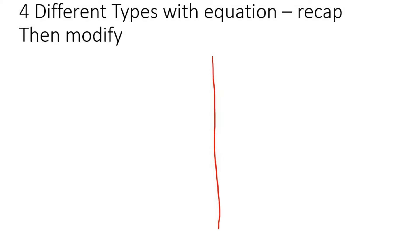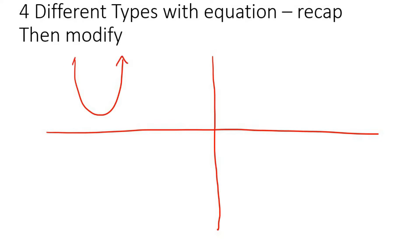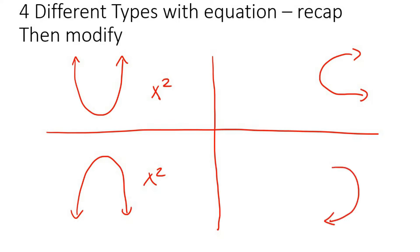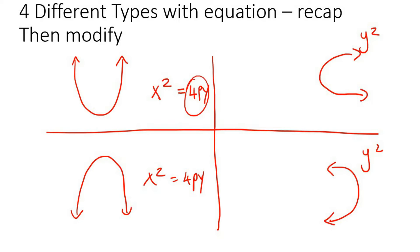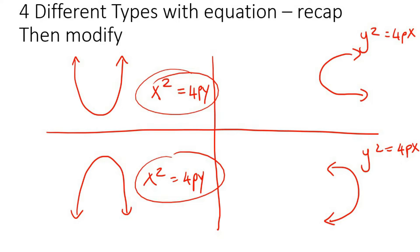Remember the four types of equations from the previous lesson. If the parabola was vertical — going up or down — I always asked you to remember x squared. If it was facing right or left, remember y squared. The basic equations used 4py, and whether that part was negative or positive tells us whether it faces up, down, left, or right. Now we're going to modify these formulas to show that equations can move left, right, up, and down — all at the same time.